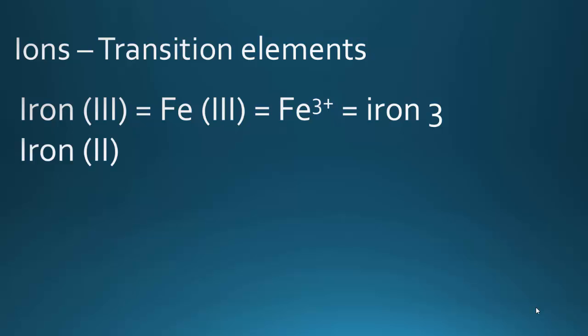But you could have iron followed by the Roman numeral II, which could be written like this, which produces this ion. And you would say you have iron two. And the iron three ion does not react chemically the same way as the iron two ion reacts. So they are two different chemicals.